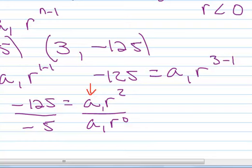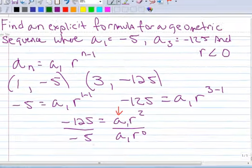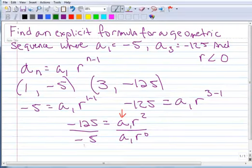All right. So let's go ahead and do the division here. Negative 125 divided by negative 5 is 25. And of course the a sub 1's cancel. r squared divided by r to the 0 is r squared.